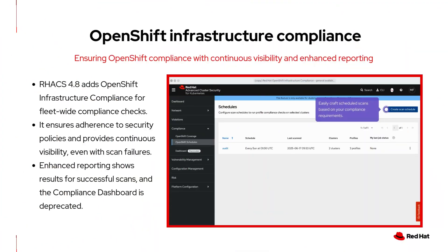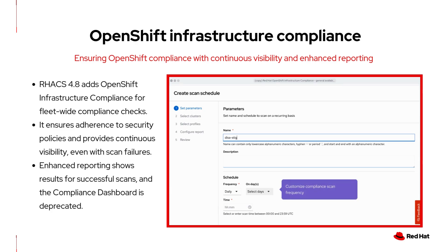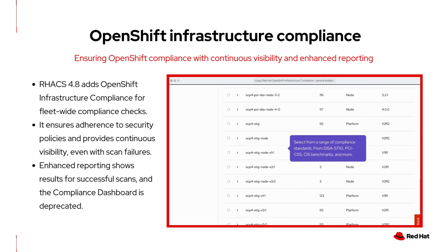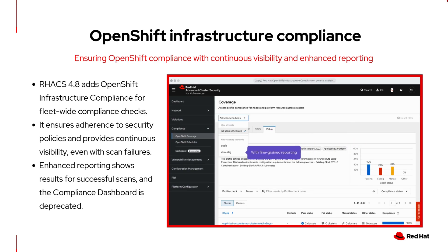ACS 4.8 introduces the general availability for OpenShift infrastructure compliance. This feature helps ensure your OpenShift clusters meet your organization's security policies using the OpenShift compliance operator to assess compliance across your entire fleet. It also includes improved reporting — even if some clusters fail during a scheduled scan, you'll still get reports for the ones that succeed, giving you continued visibility into your overall compliance status.